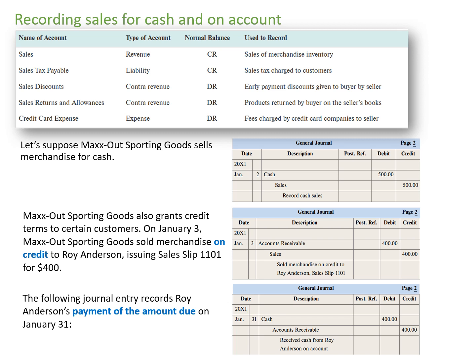Let's look at the next transaction. Max Out Sporting Goods also grants credit terms to certain customers. On January 3rd, Max Out Sporting Goods sold merchandise on credit to Roy Anderson, issuing sales slip 1101 for $400. We record this transaction by debiting accounts receivable and writing $400 into the debit column, then crediting sales for $400. When Roy Anderson pays Max Out Sporting Goods on January 31st, we debit cash and credit accounts receivable for $400.